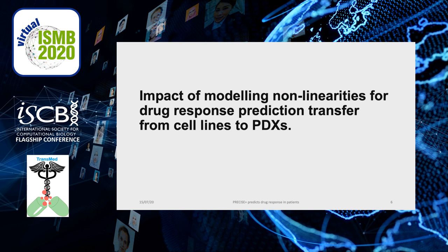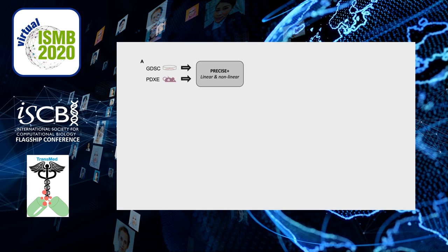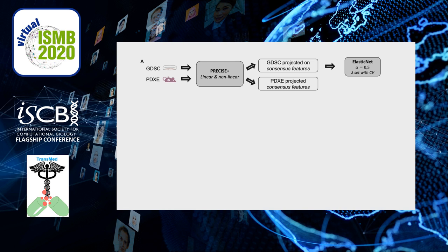We first use PrecisePLUS to model the impact of nonlinearities in the cell line to PDX study. We take the cell lines and the PDX, apply PrecisePLUS, compute the consensus features, and project both datasets — GDSC and PDXE. We use the projected GDSC to train an elastic net without using any data from PDX, and we correlate using Spearman correlation the predicted AUC obtained after PrecisePLUS on the PDX with the known best average response.